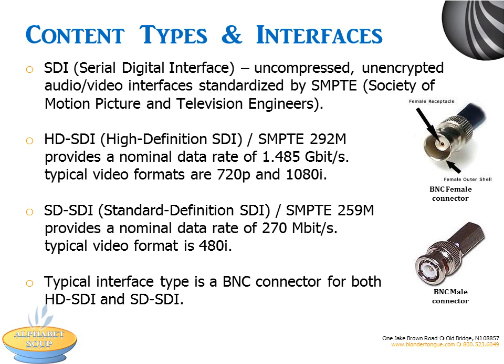Both are uncompressed as well as unencrypted, meaning without content protection. SDI was standardized by the Society of Motion Pictures and Television Engineers, which gives you a clue that you usually see SDI sources in the professional video production environment. HD-SDI is for high-definition video formats of 720p and 1080i, and provides a nominal data rate of 1.485 Gbps. SD-SDI is for standard definition format of 480i and a nominal data rate of 270 Mbps.